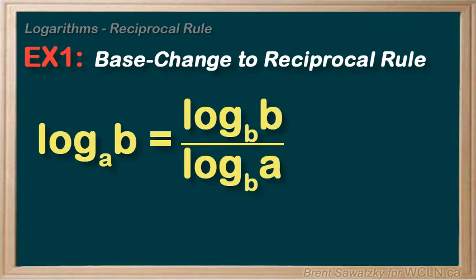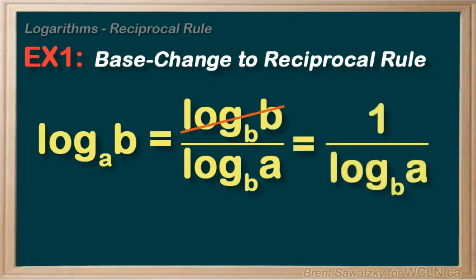And from there we see that on the top log base b of b equals, well that's just 1. And on the bottom we're left with log base b of a. And we look back, and this is our reciprocal rule. We're done.